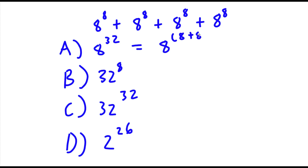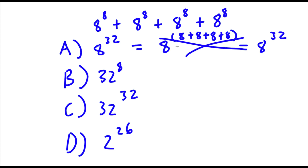So 8 plus 8 plus 8 plus 8. And this is equal to 8 to the power of — 8 plus 8 is 16, 16 plus 8 is 24, 24 plus 8 is 32. And this method is actually wrong. You can't add exponents like that.